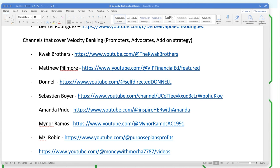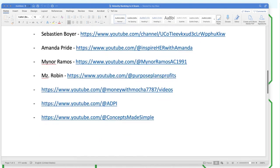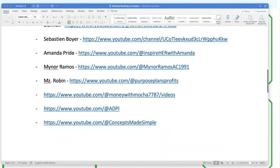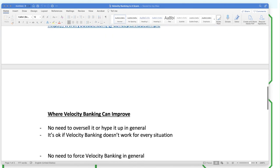So it's not their primary purpose for having the YouTube channel, but it's one of the top things that they talk about. And they're for the concepts. You got Kwok Brothers. You got Matthew Pillmore, VIP Financial Education. You got Donnell, Self-Directed. You got Sebastian Boyer, The Approved Guy. Amanda Pride, that's a client of mine. Mina Ramos, another client of mine. You got Miss Robin, client of mine. Just became a client recently, working with her. And then there are three other YouTube channels. I don't know their names, so I just put their YouTube channel links. So that's the market research that I've done for you already. That's who is in the space. There's a handful of people talking about Velocity Banking.